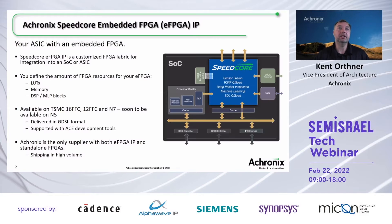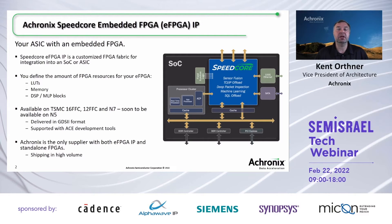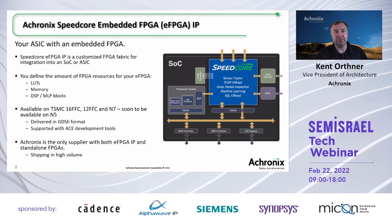We're going to be talking today about embedded FPGAs. The idea with an embedded FPGA is you are developing an ASIC yourself, but you're putting an FPGA core inside of the ASIC. Our term for this is a SpeedCore. A SpeedCore embedded FPGA IP is a customized FPGA fabric for integrating into an SoC or an ASIC. With an embedded FPGA, you get to define the amount of FPGA resources on your chip — the number of lookup tables, the memory, and the DSP and MLP blocks.